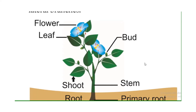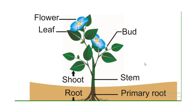In a flowering plant, the shoot system includes the stem, leaves, buds, flowers, and fruits.